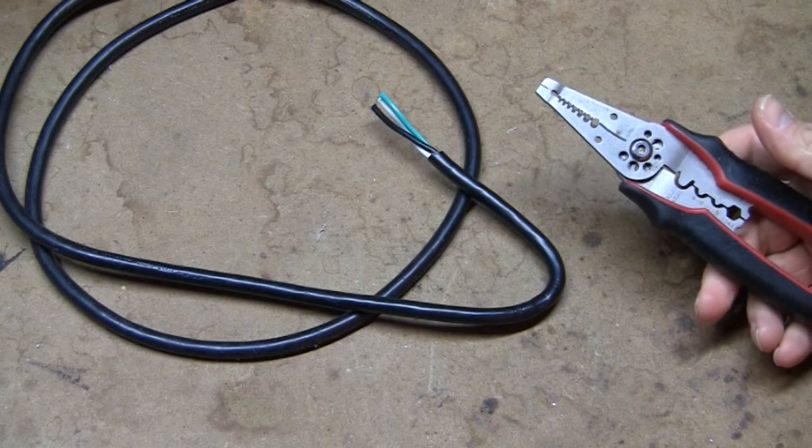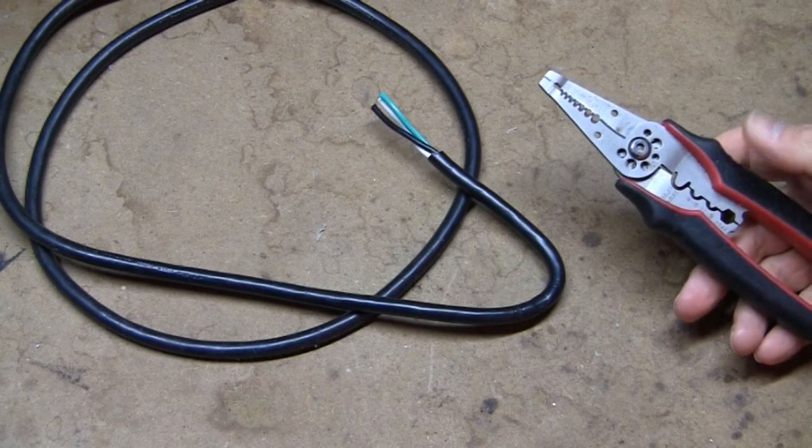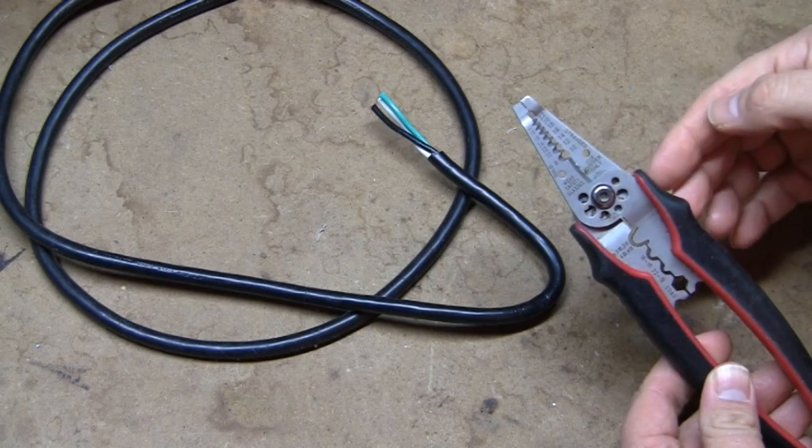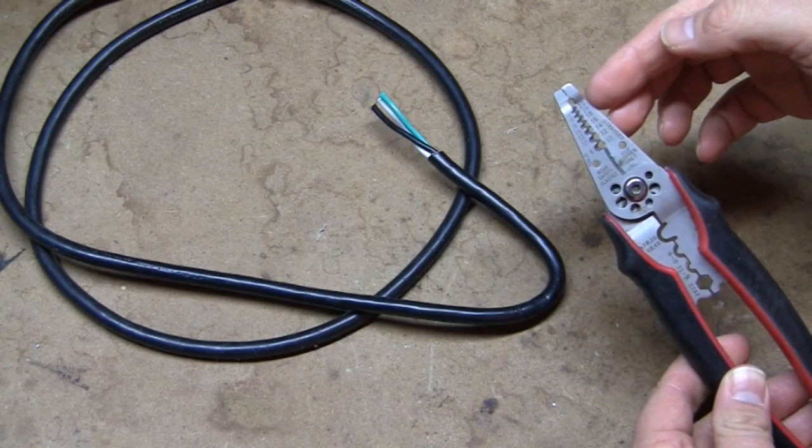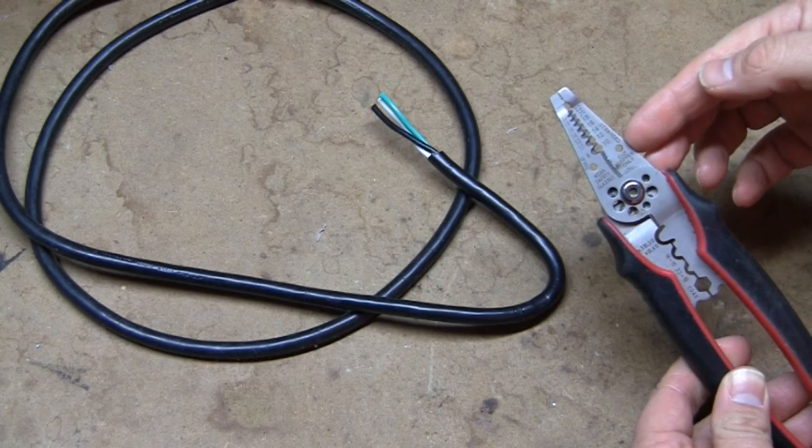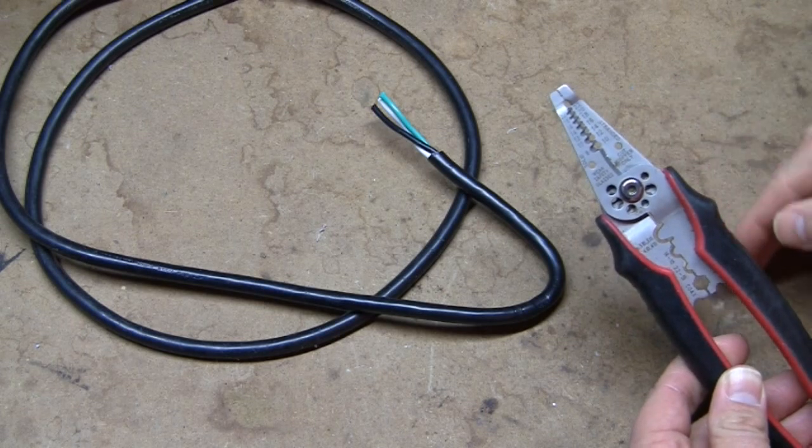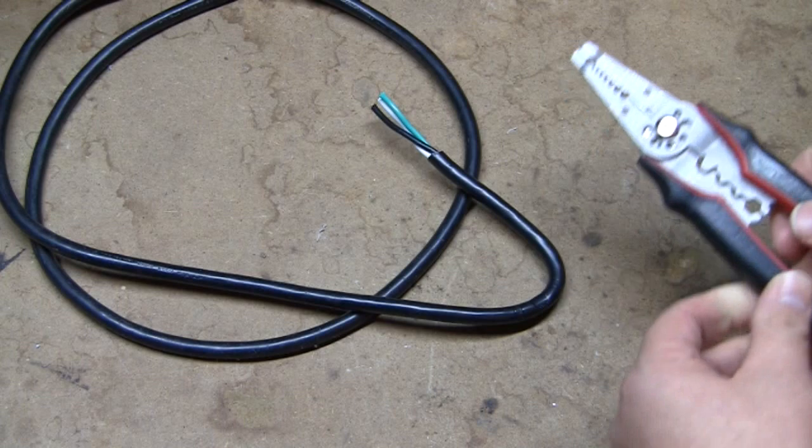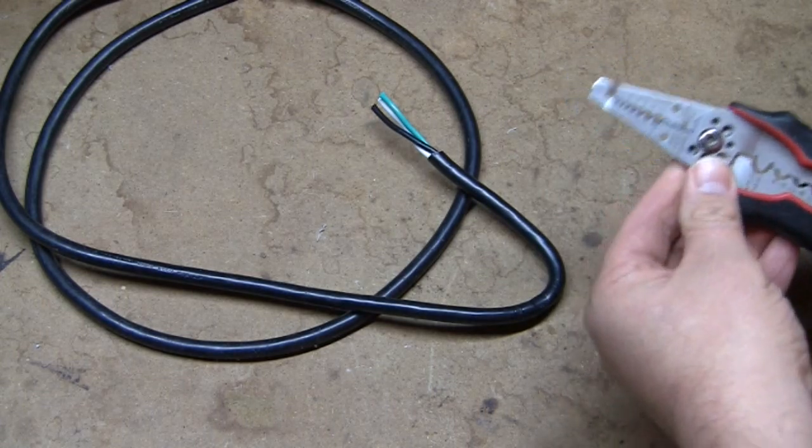You can pick up a pair of wire strippers from your local hardware store or even Amazon. On the side of these wire strippers, you have the different wire gauges marked on the side of the stripper itself. So if you know the size of the wire you're stripping, you can just put it into the slot.